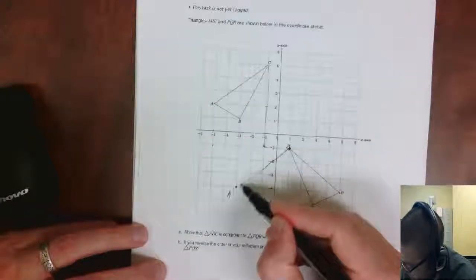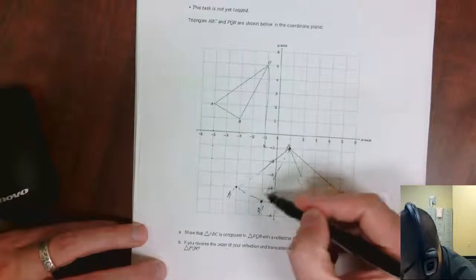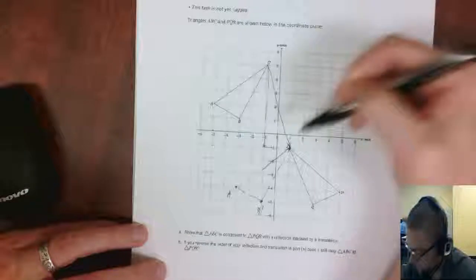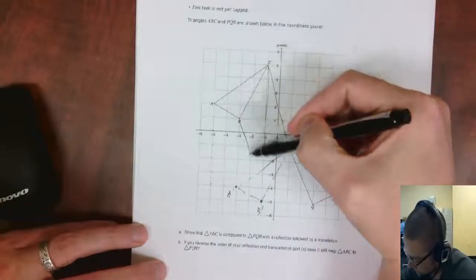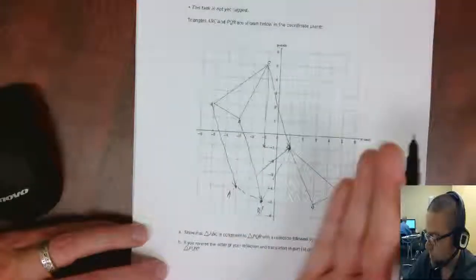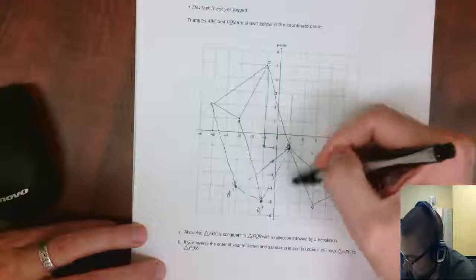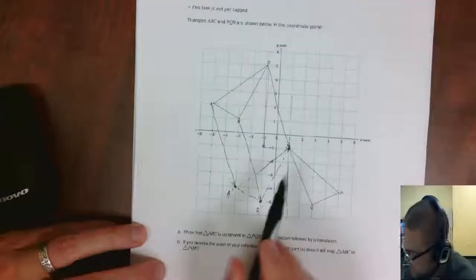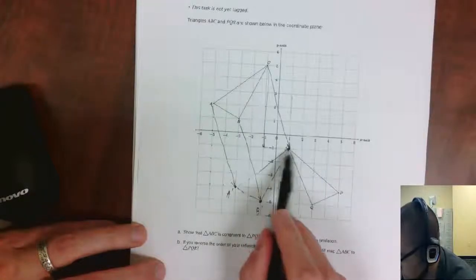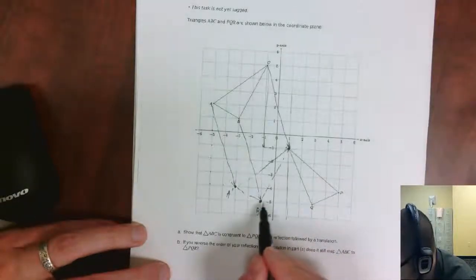And now I have my intermediate triangle here. So I did a translation by this vector going down 6 and over 2. Going down 6 and over 2. Going down 6 and over 2. And now I'm going to reflect it over the line x equals 1. This line right here. So everything, so C itself, C prime is 0 away from the line, so it goes right onto itself.